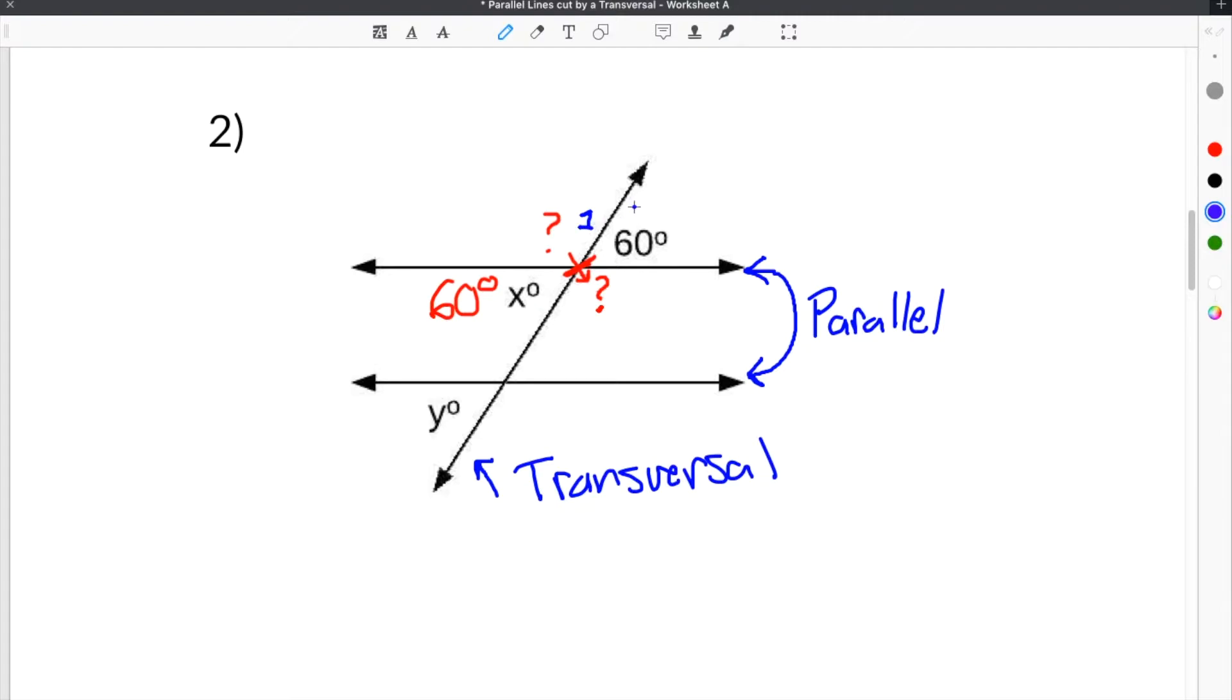So we'll do 1, 2, 3, 4. And it also occurs down here: 1, 2, 3, 4. Now, each of these angles corresponds with the other angle of the same number. So angle 1 here will be equal to angle 1. Angle 2 will be equal to angle 2, 3 and 3, 4 and 4.